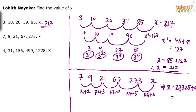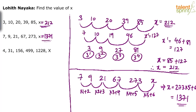So the answer for the second series is 1371. Now the last series: 4, 31, 156, 499, 1228, x. This is a typical hard one. Honestly, I failed to crack this question myself — I just skipped it. It may not sound appropriate, but don't run behind these questions; don't try to crack every question from number series, as that's a gamble with no definite method.